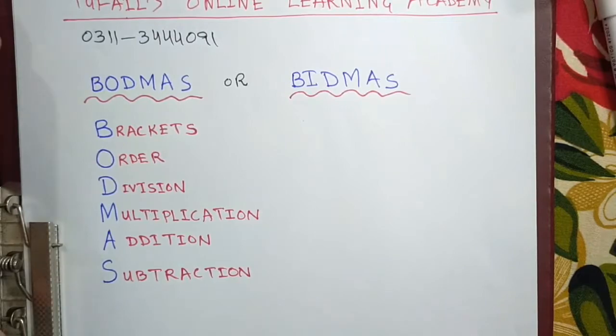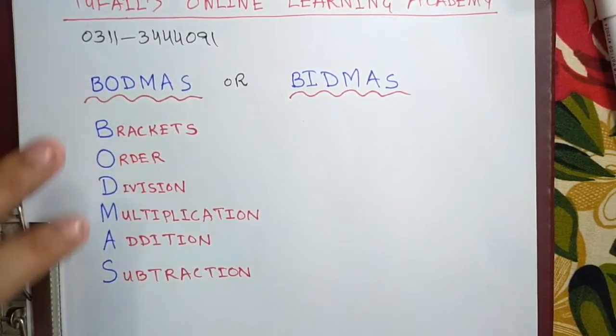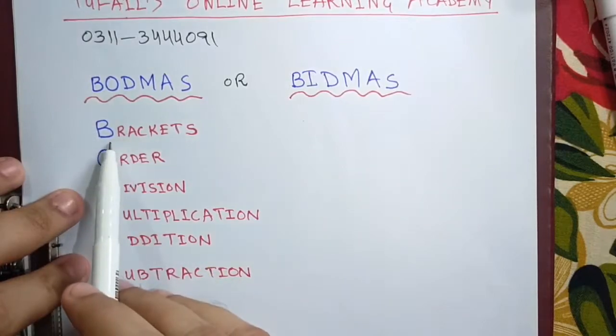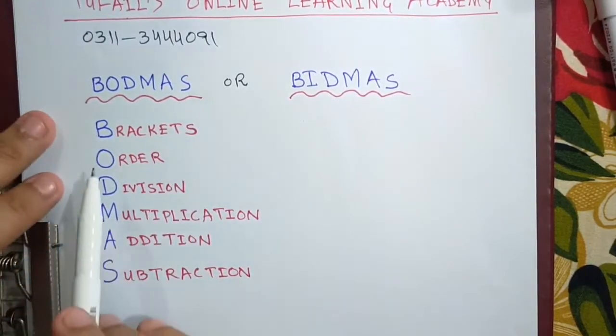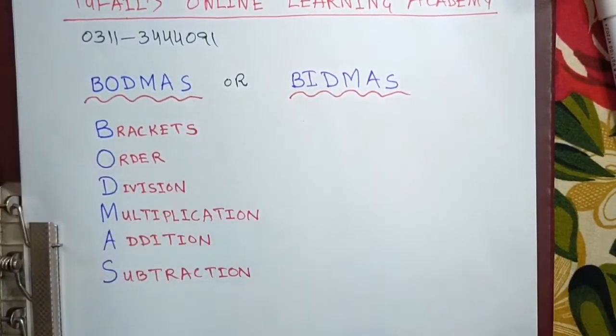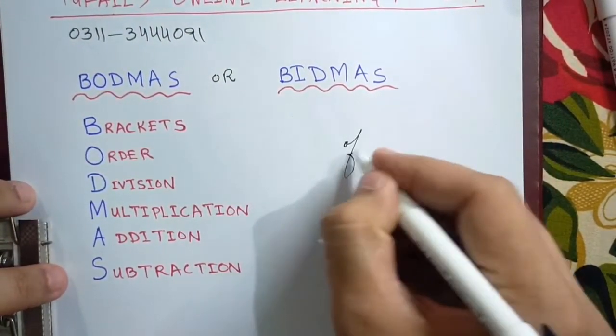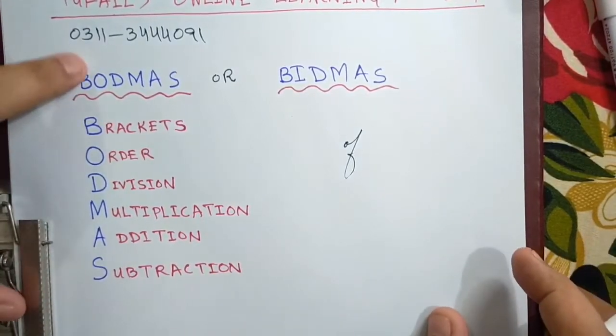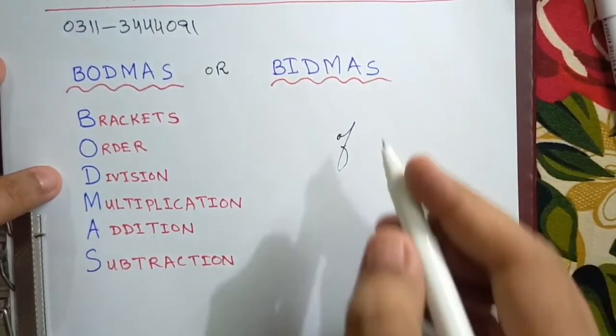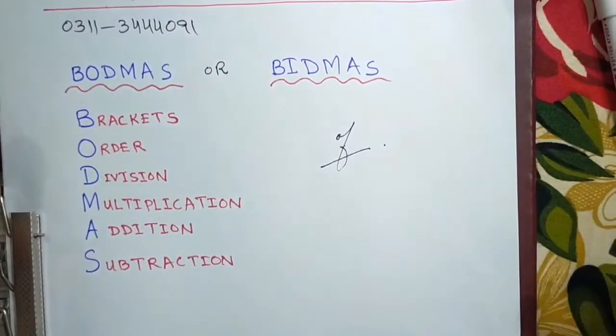In which each letter stands for a particular word. B stands for brackets, O stands for order. Many have told me that O stands for off, like this off. This is not true. This O stands for order.